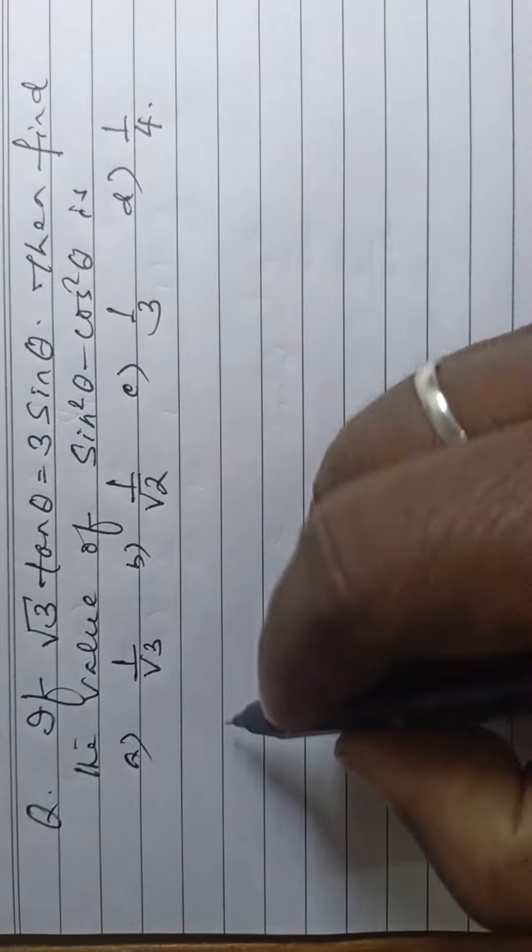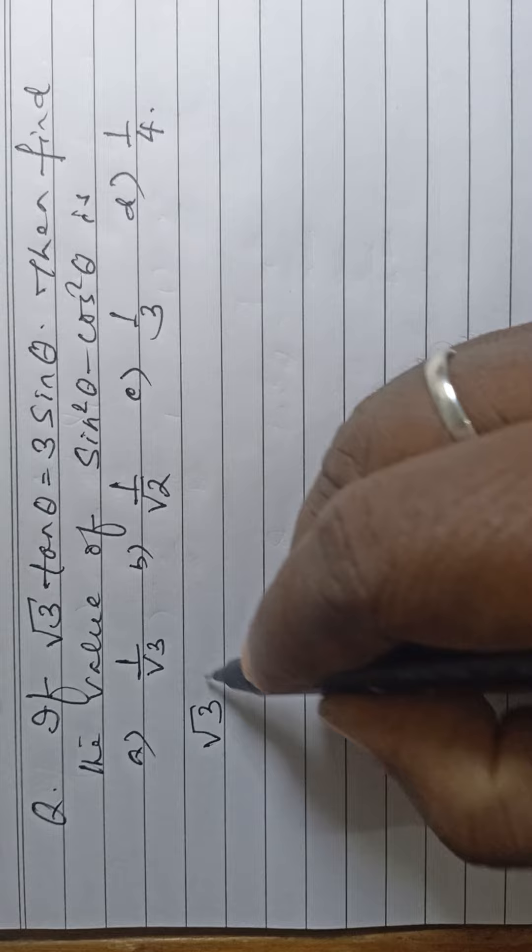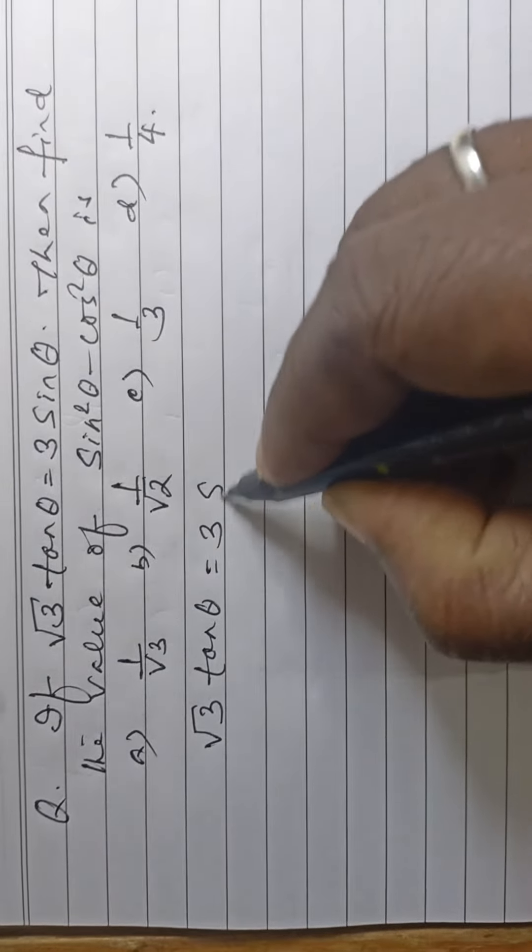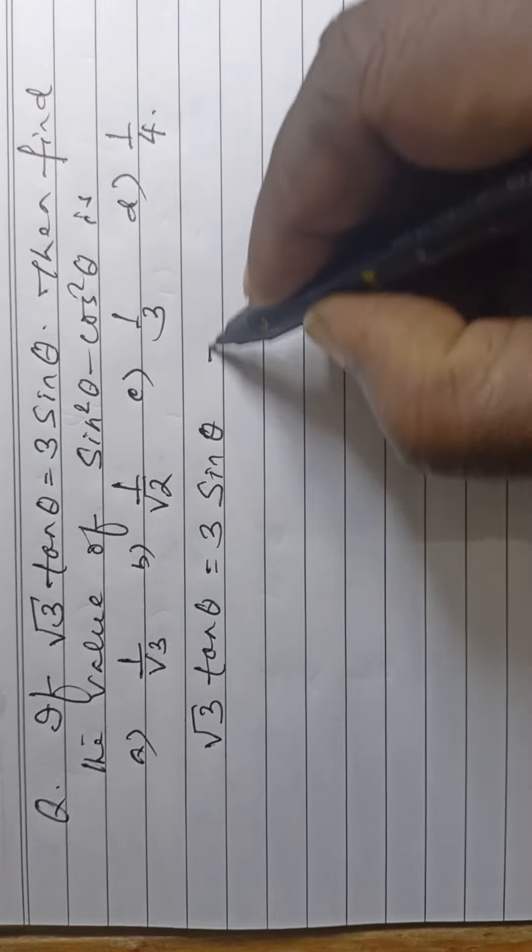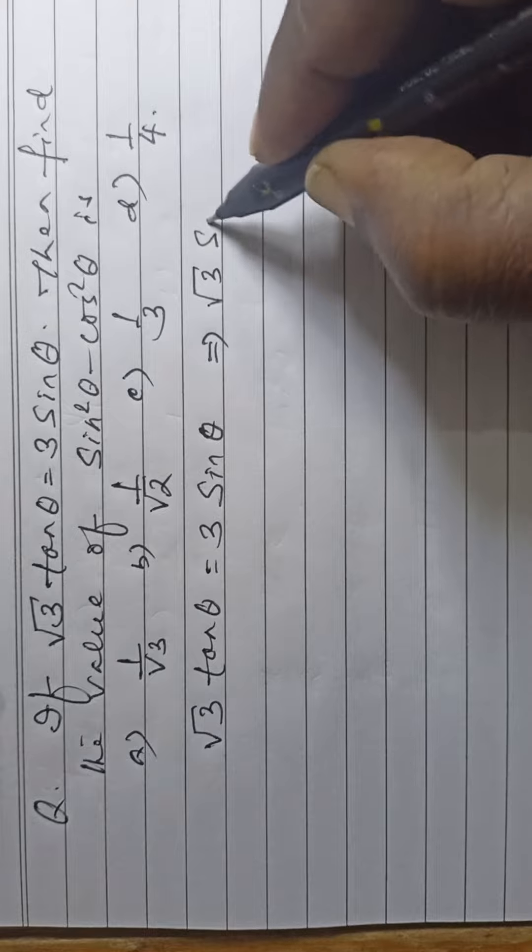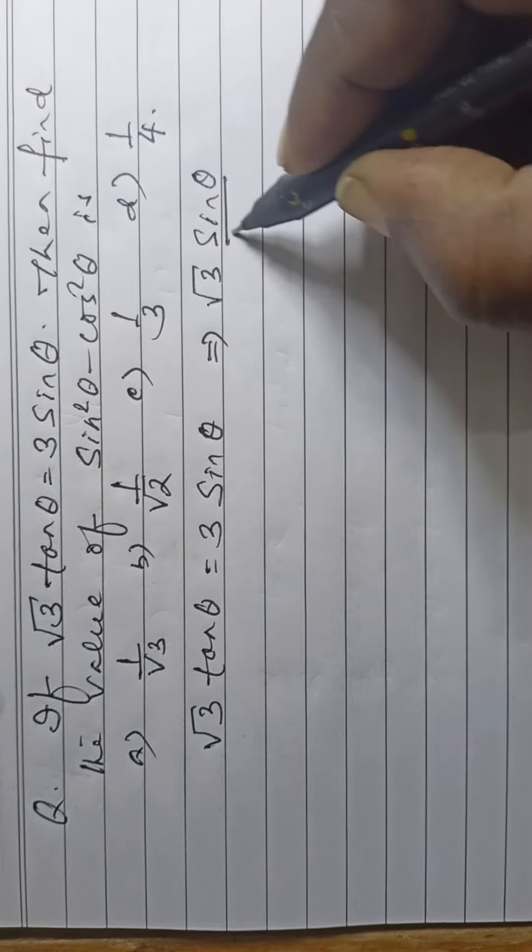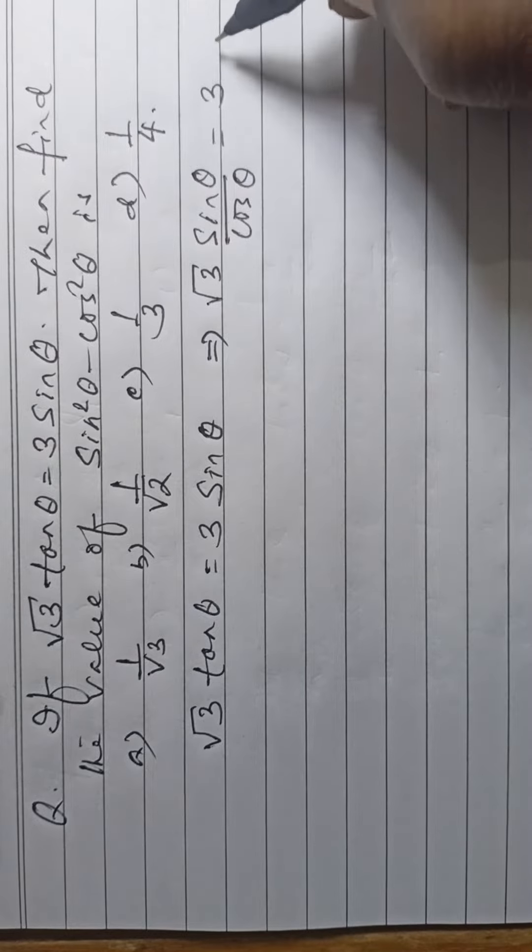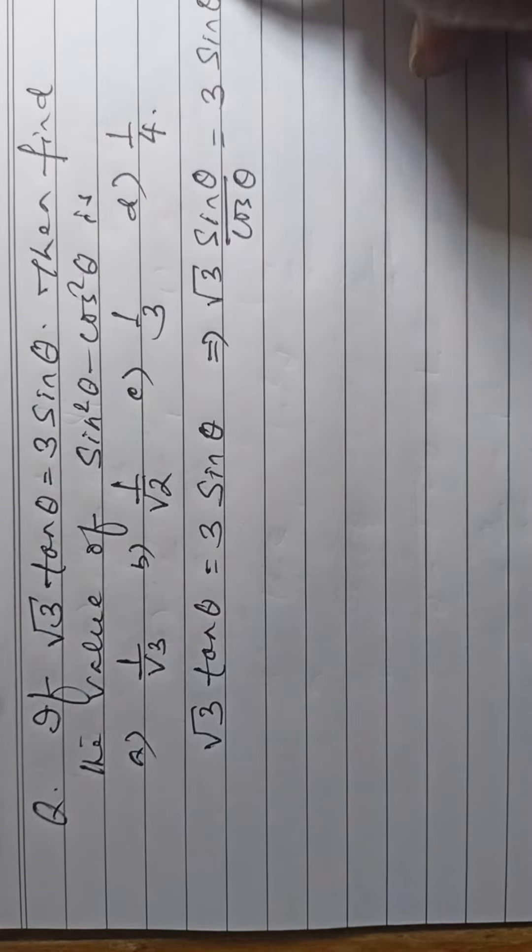Now, from the question, root 3 tan theta is equal to 3 sin theta. Now, root 3 sin theta by cos theta is equal to 3 sin theta.